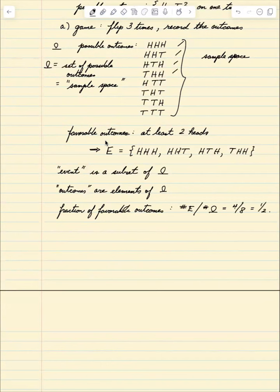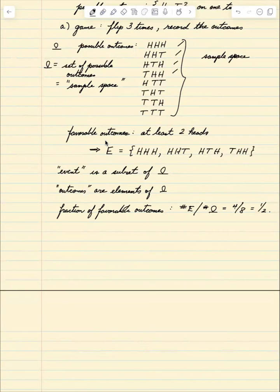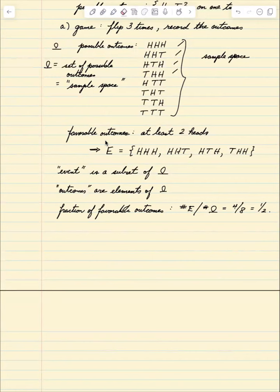An event is a subset of omega. The elements of omega are called outcomes. When we toss the coin three times, one of these eight outcomes will happen, but we might not care about the specific outcome — we might just care about some event defined by those outcomes, such as there being at least two heads. An example of probability here is the fraction of favorable outcomes: four outcomes in the event divided by eight total possible outcomes, giving one half.